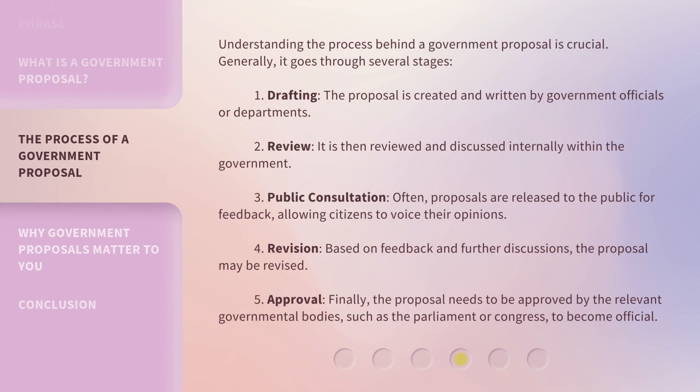Understanding the process behind a Government Proposal is crucial. Generally, it goes through several stages. One, drafting — the proposal is created and written by government officials or departments. Two, review — it is then reviewed and discussed internally within the government. Three, public consultation — often, proposals are released to the public for feedback, allowing citizens to voice their opinions.